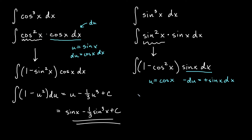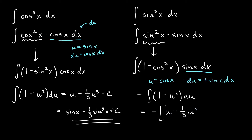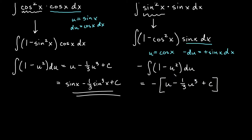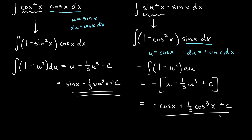We get the negative integral of (1 minus u²) du. Applying the power rule, we get negative times (u minus one-third u cubed) plus C. Distributing the negative and replacing u with cosine x, we get negative cosine x plus one-third cosine cubed x plus C. So again, the idea on these two: save one copy, use a Pythagorean identity, then u-substitution.